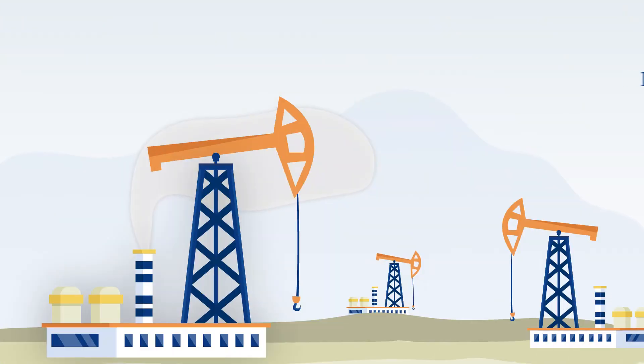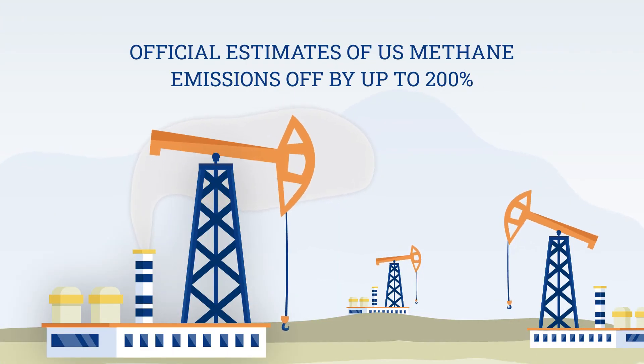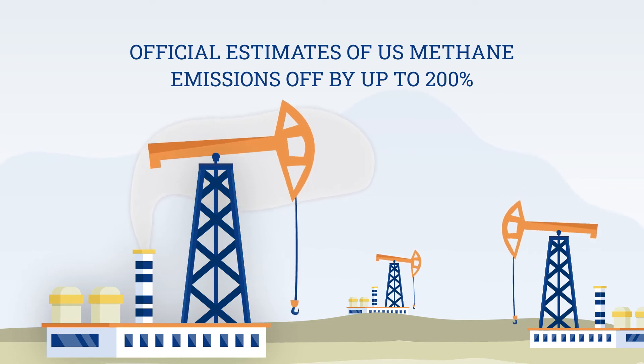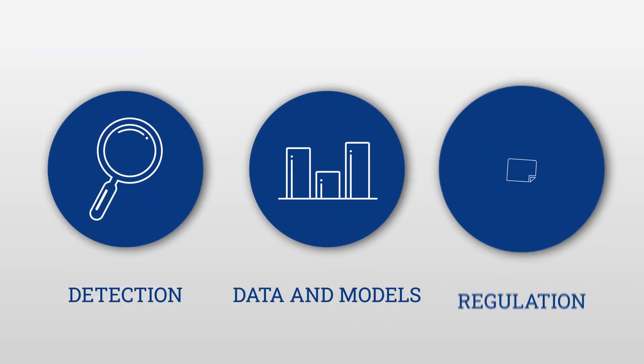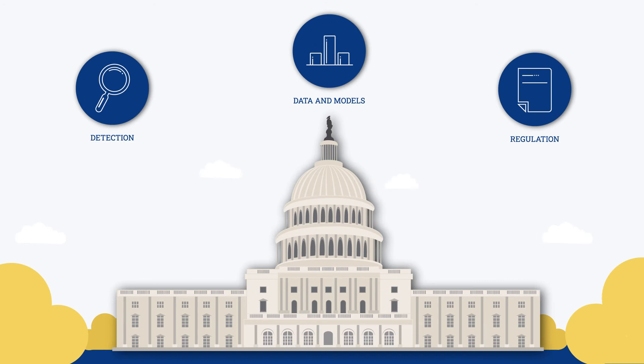Third, we have no reliable estimate of total methane emissions, making it impossible to verify emissions reduction targets. Our study highlights several recommendations across three key areas that the federal government can take to help solve these problems.